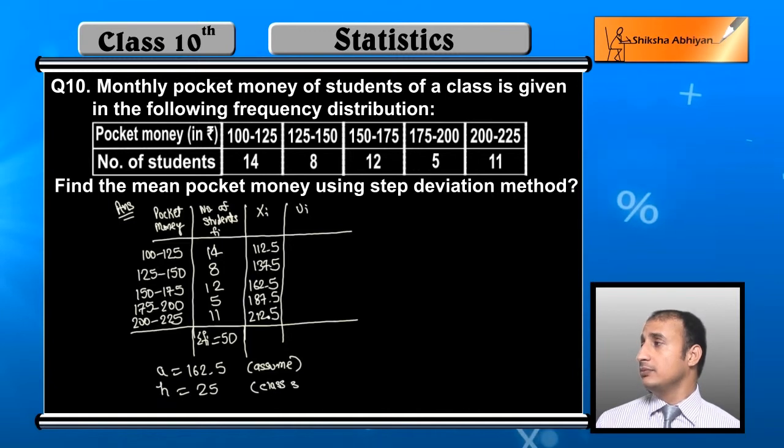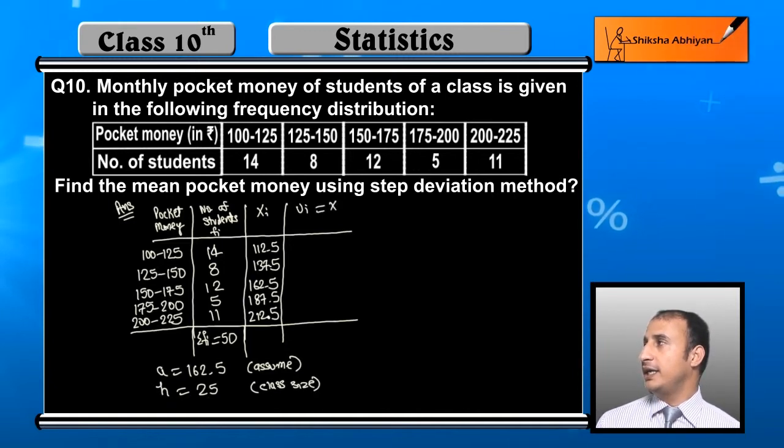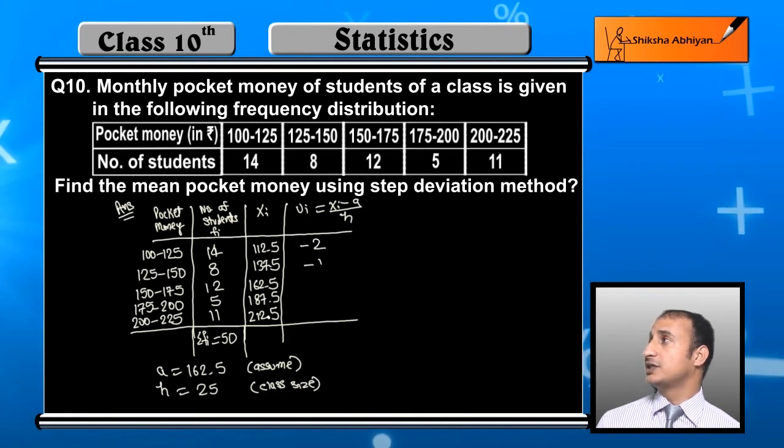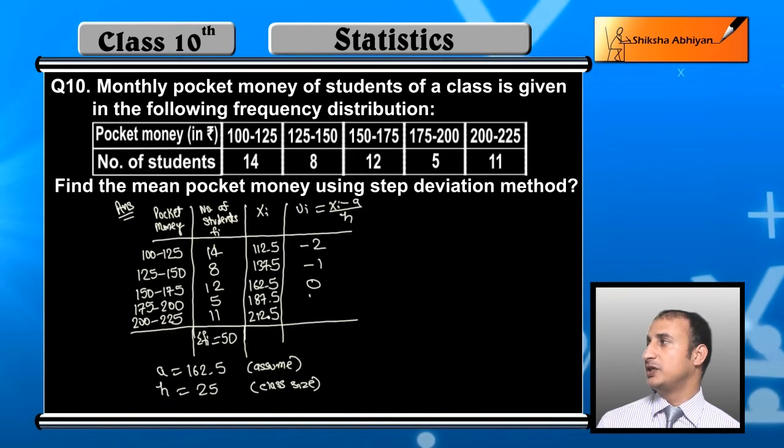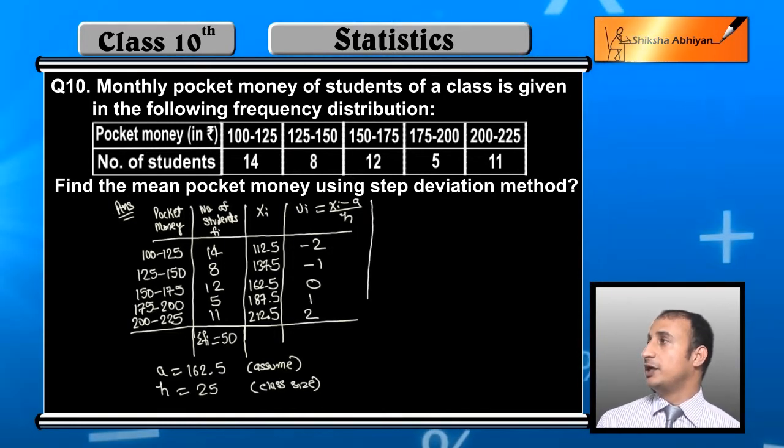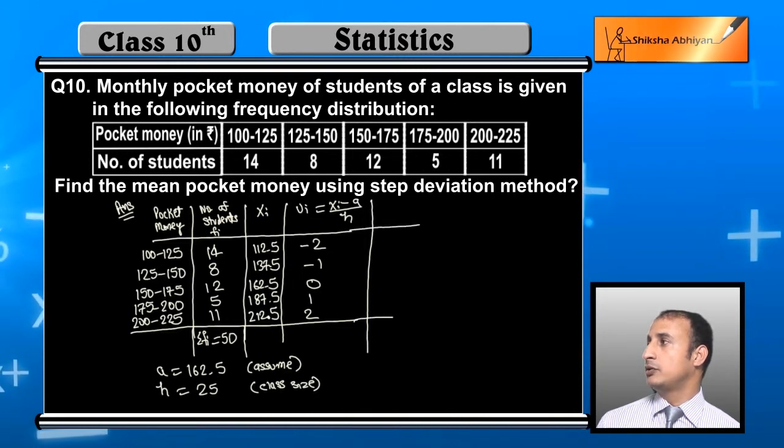So UI will become xi minus a upon h, meaning for each class we calculate xi minus 162.5 divided by 25. For the first class UI value is minus 2, second is minus 1, then 0, 1, and 2.